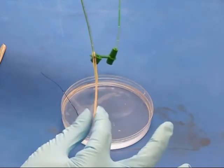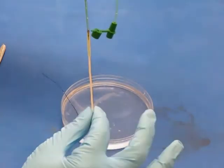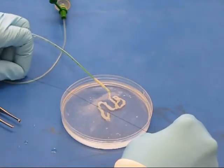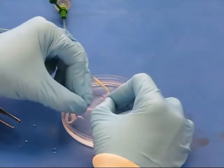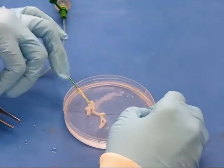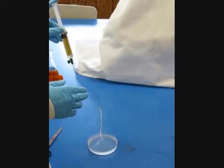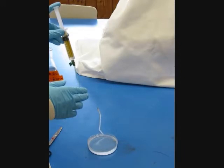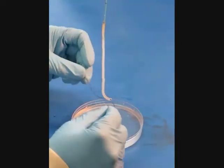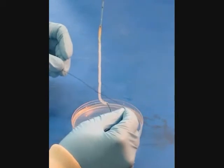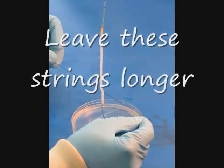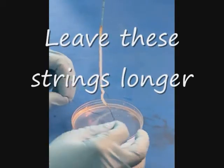From this point on do not touch the everted intestine except by the sutures you are about to attach. Now tie another double knot at the open end of the intestine. Gently begin to dispense the solution from the syringe.